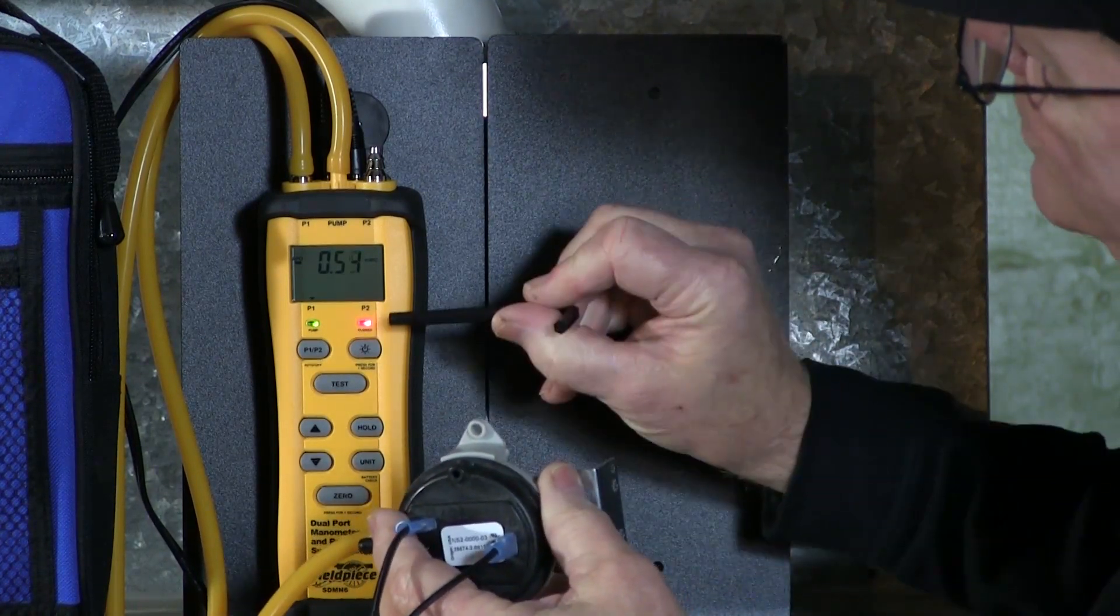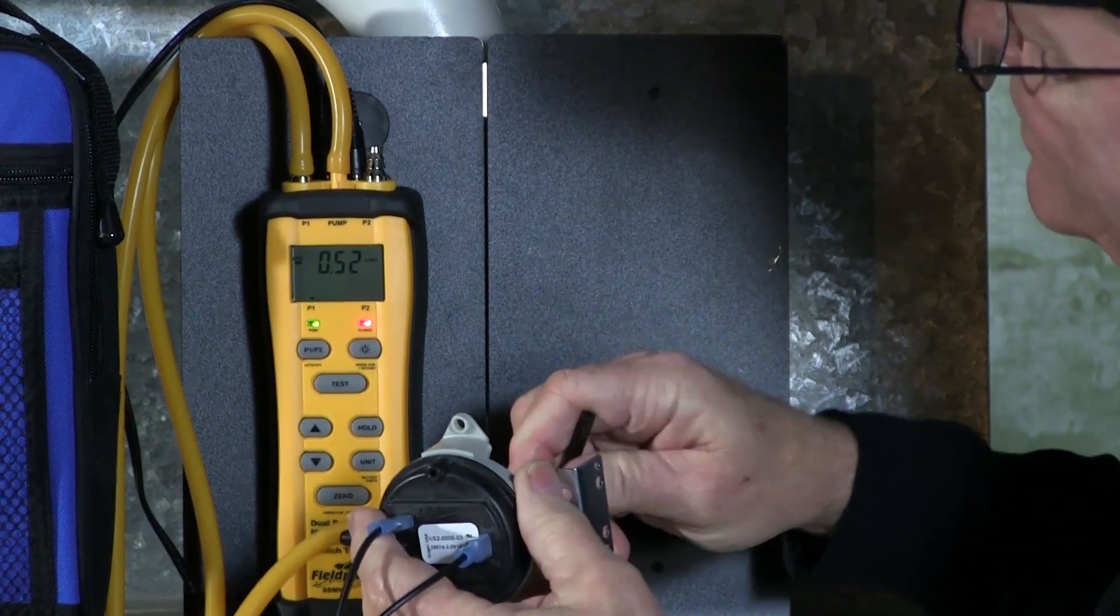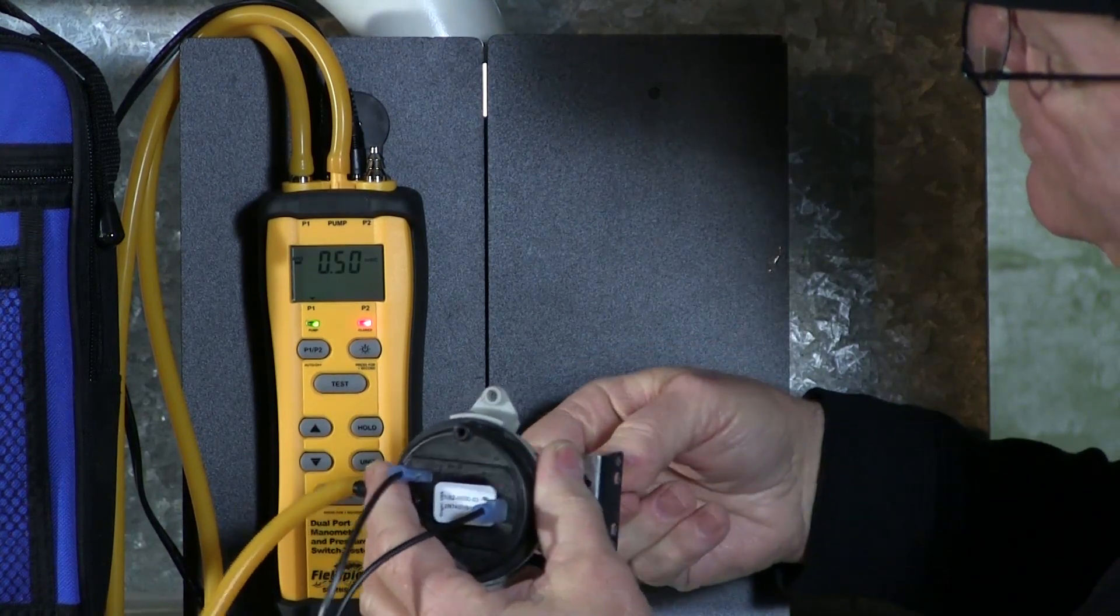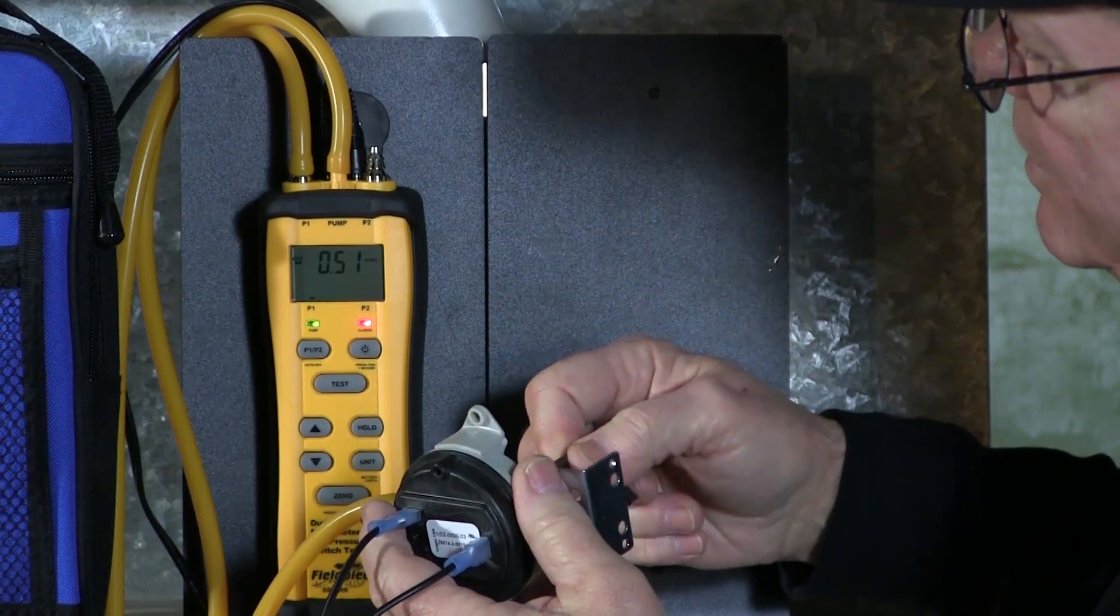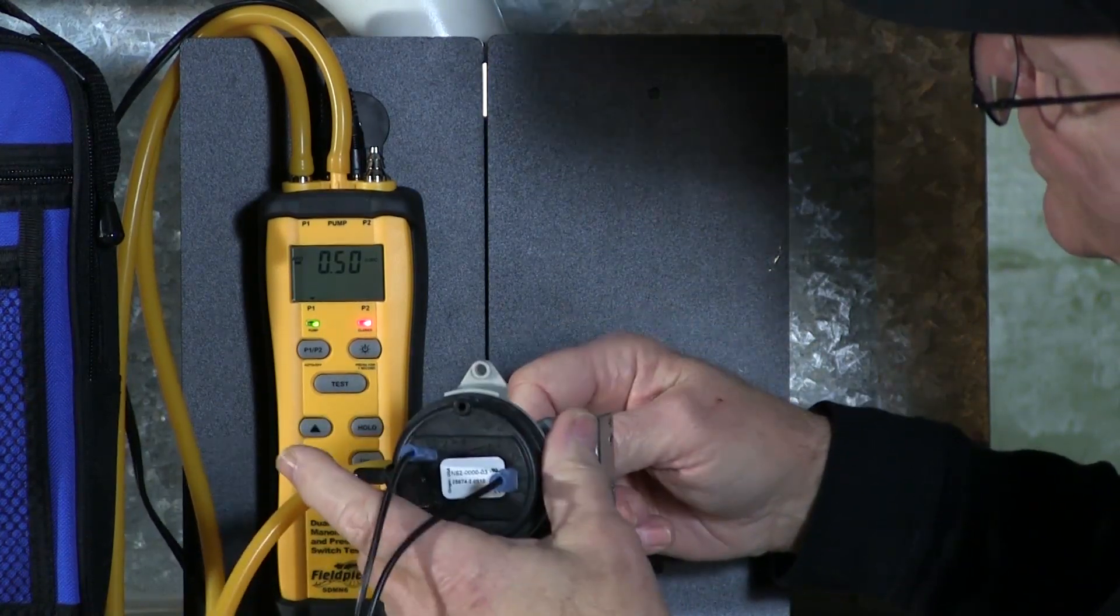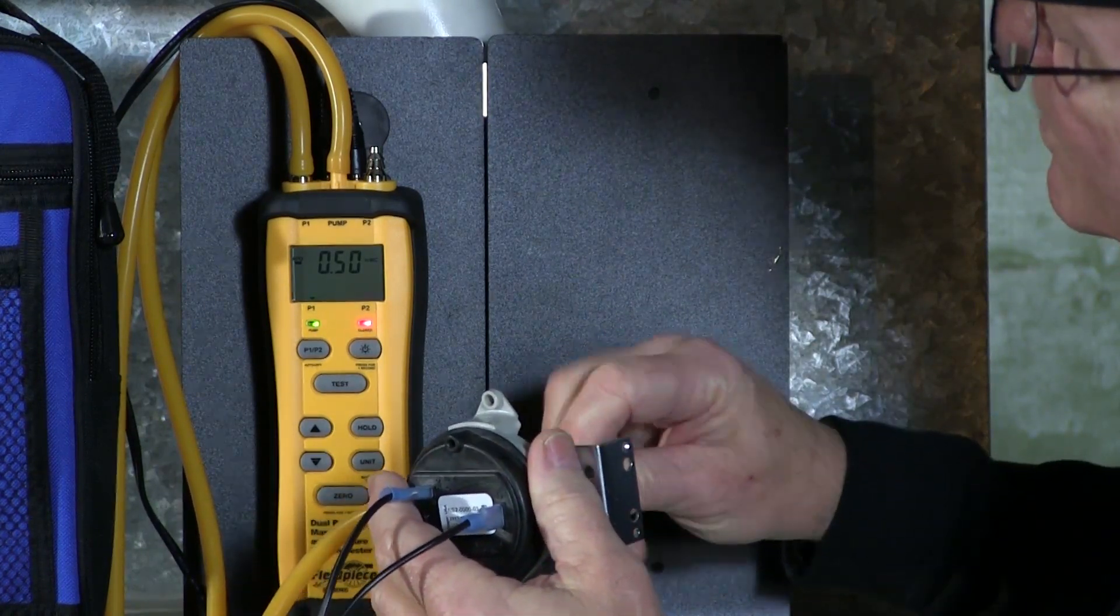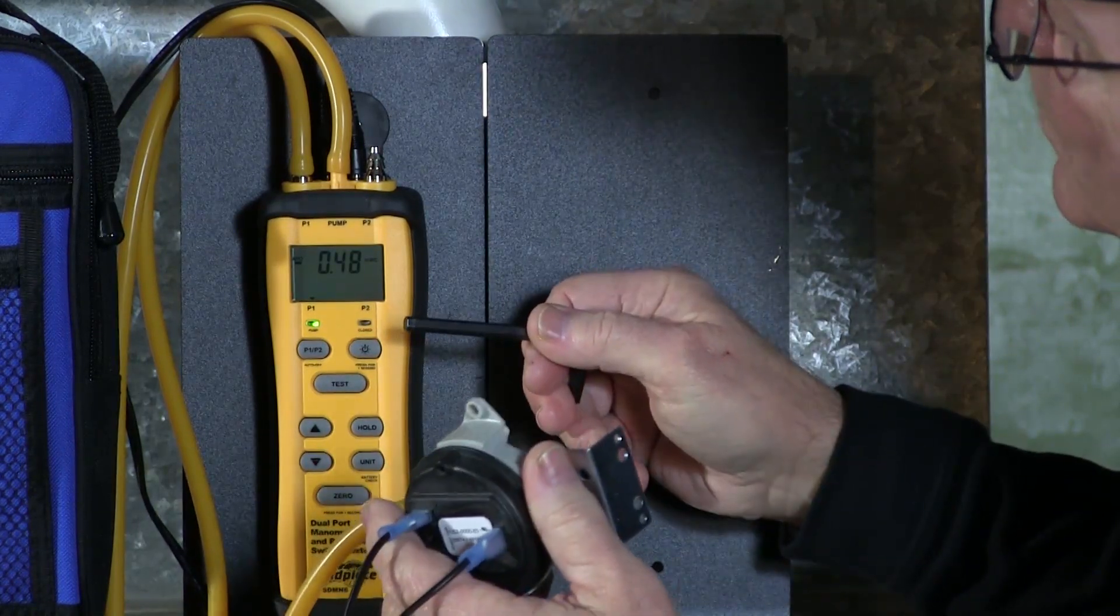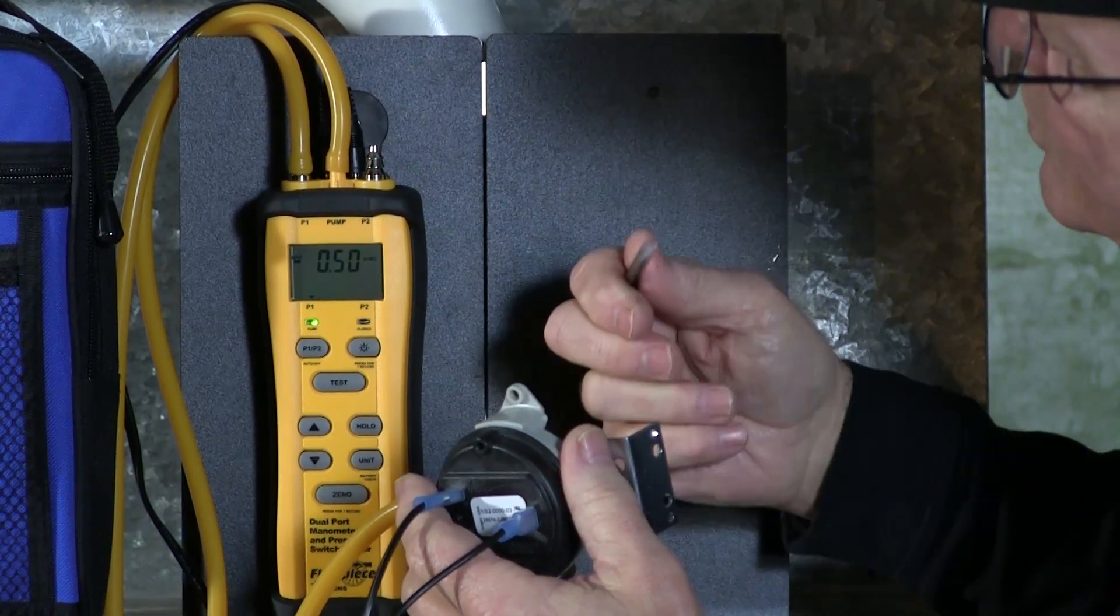And you see the red LED did come on. And what I'm going to do is back it down now until the red LED goes off. Now, if you had already started with a red LED because it was already closed when you were setting your pressure, then all you need to do is back it down until the red LED goes off, and it went off. So we do have a 0.50 inches of water column pressure switch.